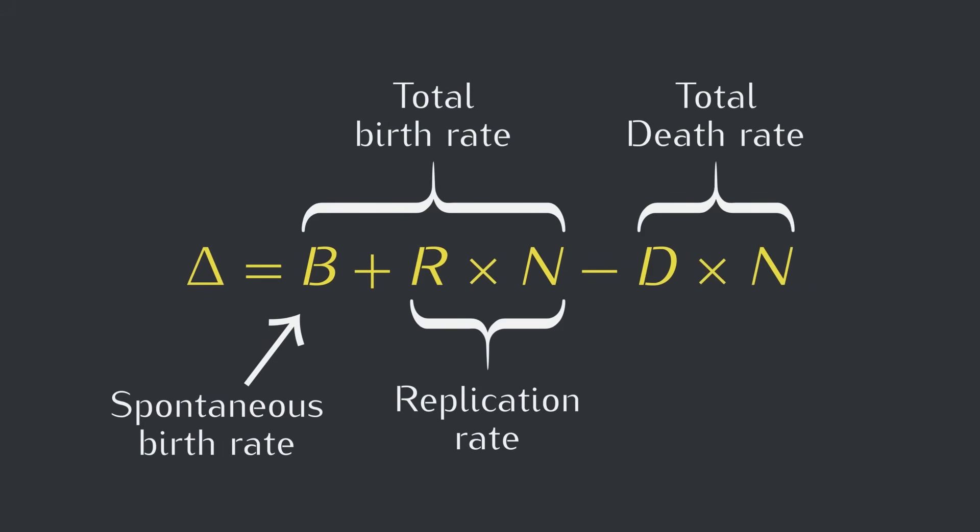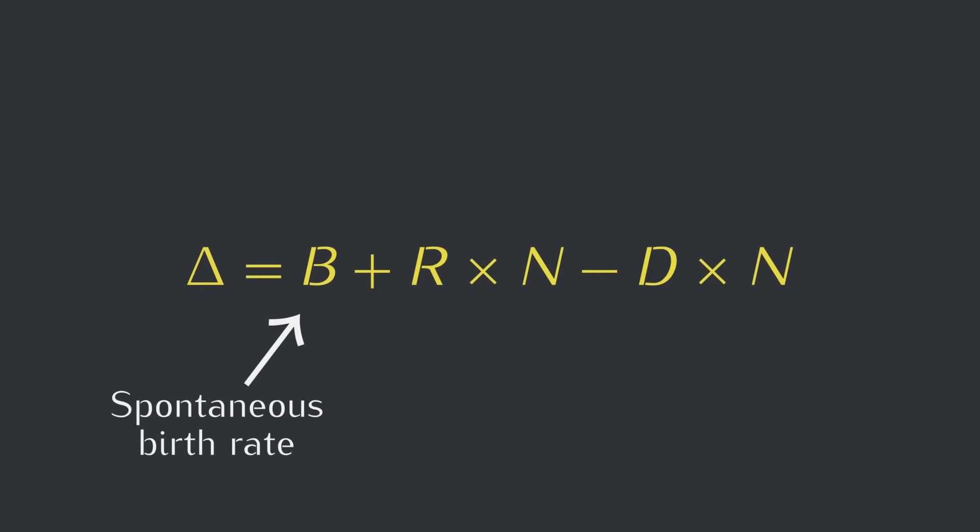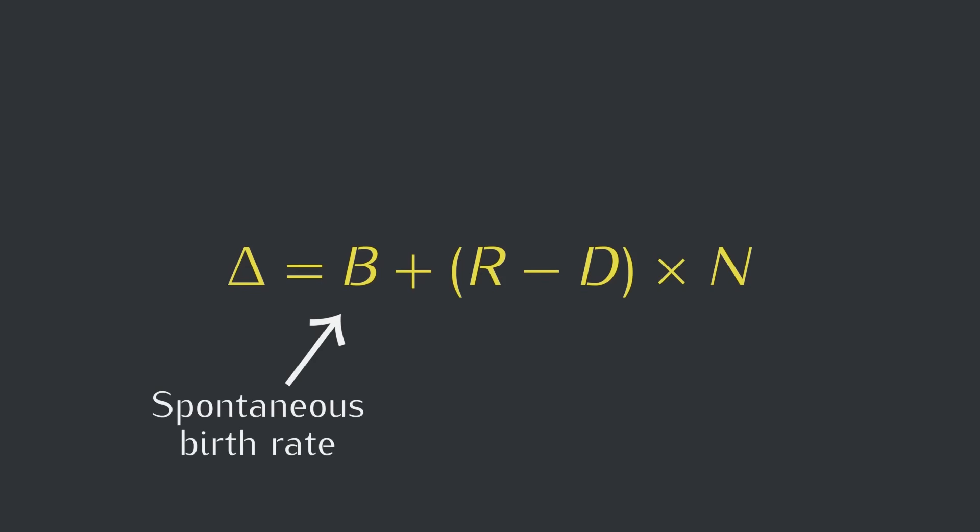Similarly, the total death rate is the chance for a single creature to die, multiplied again by the total number of creatures. Finally, we can rearrange things to see more clearly that the replication and death chances are competing to determine the expected net change per creature. This difference is going to have a big impact on the population.